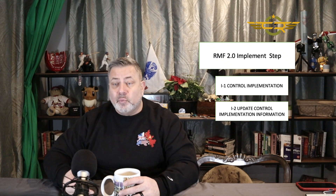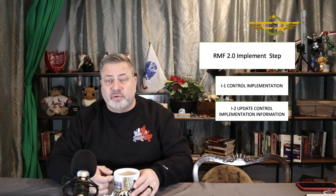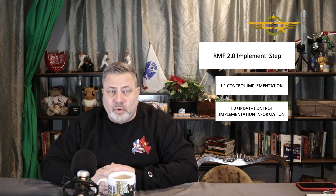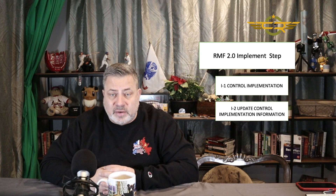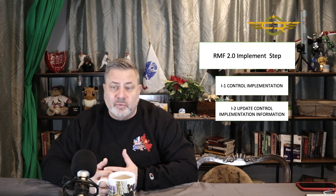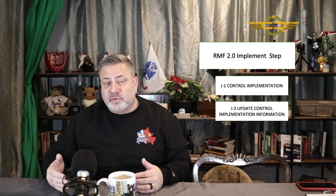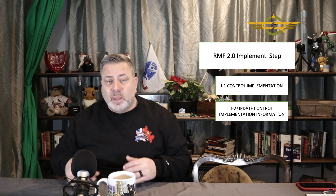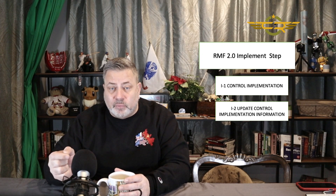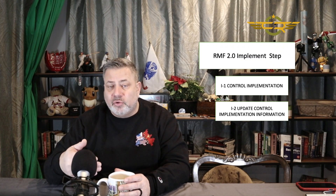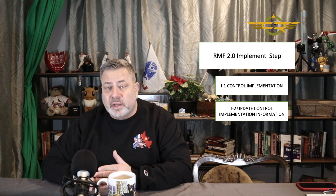We go into the SSP, the system security plan, and we update how we implemented each control. The theory is that once we come out of the implement step, we are going to turn the system or common control set or application over to the security control assessors, the SCA. The security control assessor in the next step will do an independent assessment of the controls to see how well they were implemented. One thing implied in this step is that when we implement a control, we should test it against NIST SP 800-53 and 800-53A, the assessment guide, to make sure we implemented it correctly.